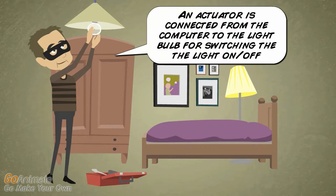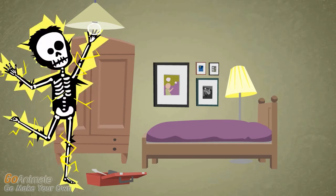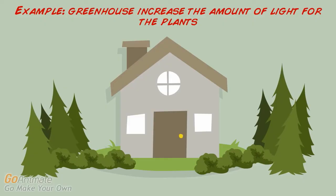Lights. An actuator is connected from the computer to the light bulb for switching the light on or off. For example, greenhouse increases the amount of light for the plants.